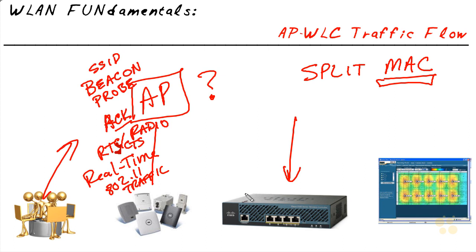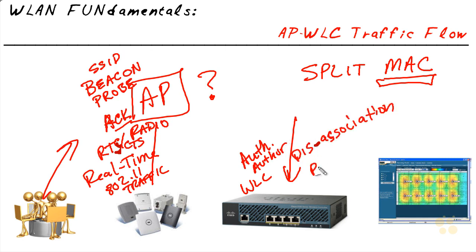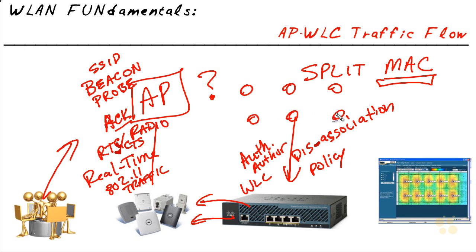Over at the controller, it handles authentication, authorization, disassociation requests, and any kind of policy implementation. In addition, if the controller is managing lots of different access points, it can coordinate the radio frequency channels each of them are using. For example, laid out with six access points in a top view, the controller knows exactly how strong those signals are because it receives feedback from the access points.